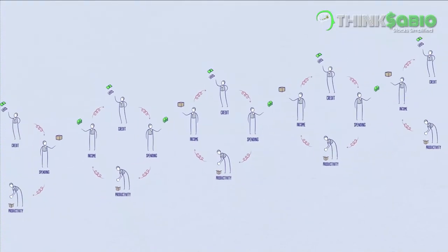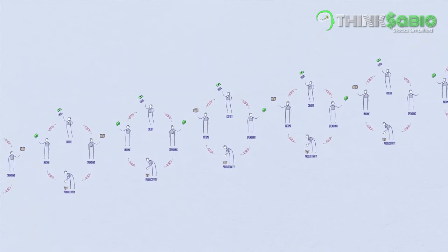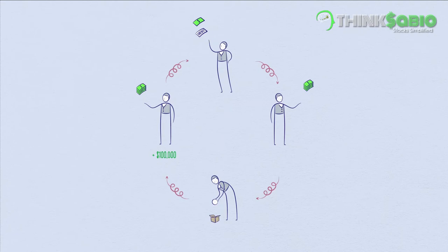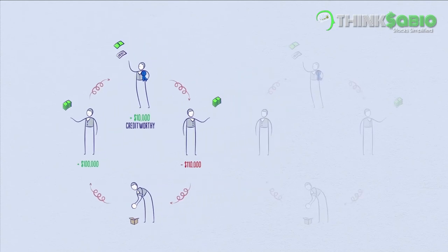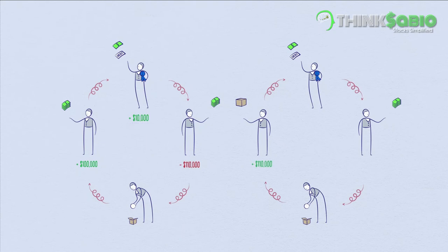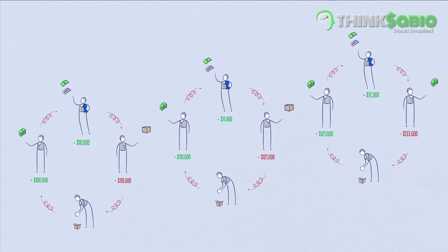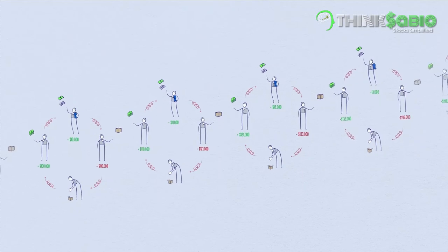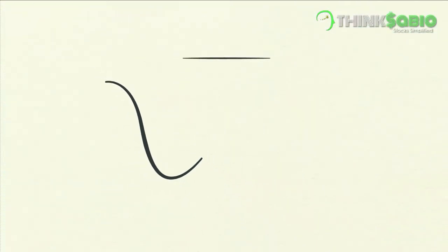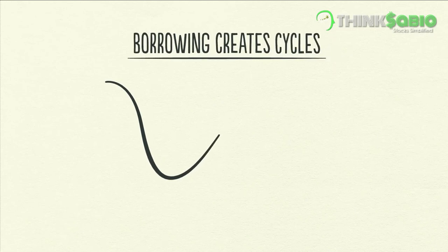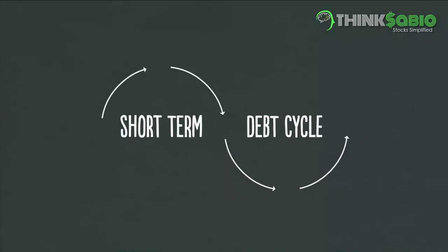In an economy with credit, we can follow the transactions and see how credit creates growth. Suppose you earn $100,000 a year and have no debt. You are creditworthy enough to borrow $10,000 on a credit card, so you can spend $110,000 even though you only earn $100,000. Since your spending is another person's income, someone is earning $110,000. The person earning $110,000 with no debt can borrow $11,000, so he can spend $121,000. By following the transactions, we can see how this process works in a self-reinforcing pattern. But borrowing creates cycles, and if the cycle goes up, it eventually needs to come down — this leads us into the short-term debt cycle.